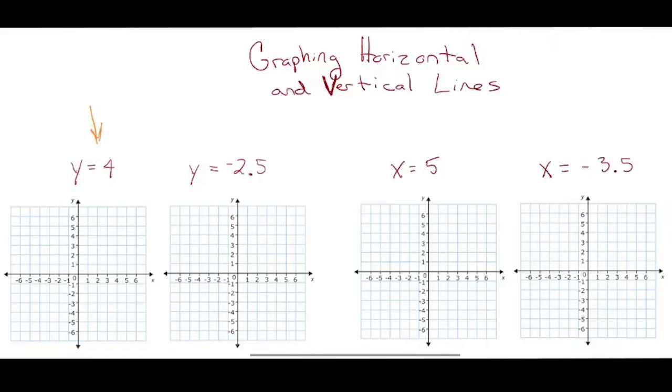If I have y equals 4, and I want to graph y equals 4, that is a horizontal line, meaning it goes from left to right and has zero slope.